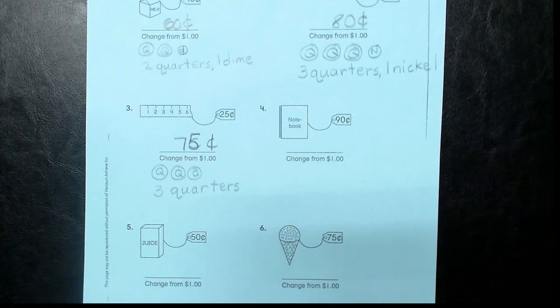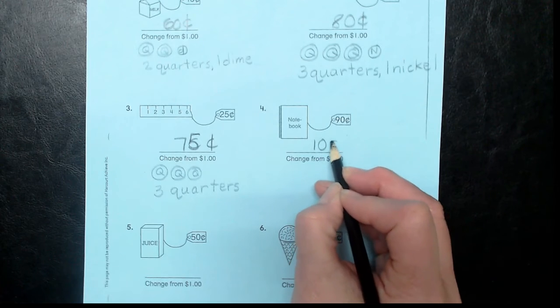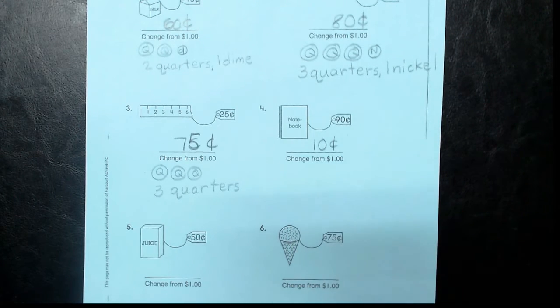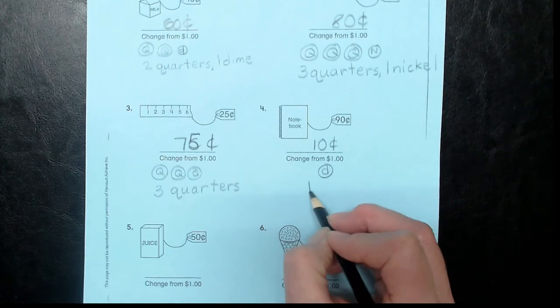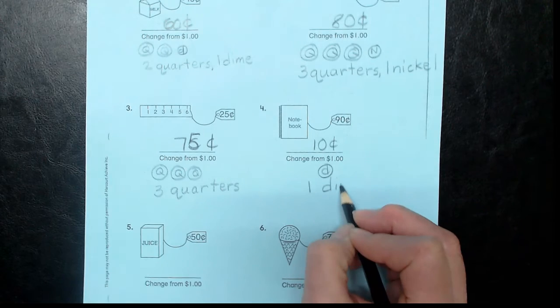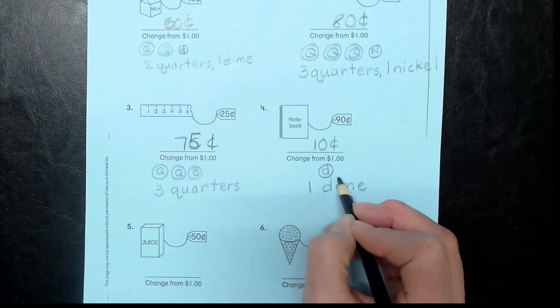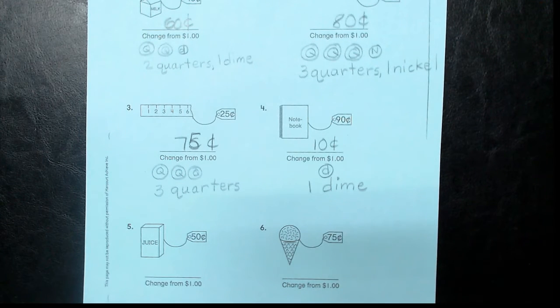That's an easy one, too. How much will you get back? 10 cents. What coin do you think you'll get? One dime. That was a really easy one, huh? We have two more left to do. We'll be done in no time.